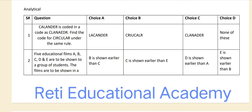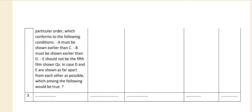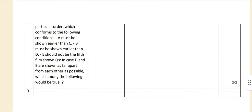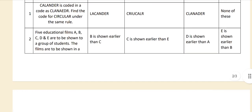Question number two. Five educational films A, B, C, D and E are to be shown to a group of students. The films are to be shown in a particular order which confirms the following conditions: A must be shown earlier than C, B must be shown earlier than D, and E should not be the fifth film shown. In case D and E are shown as far apart from each other as possible, which among the following would be true? B is shown earlier than C.